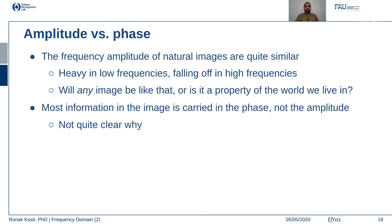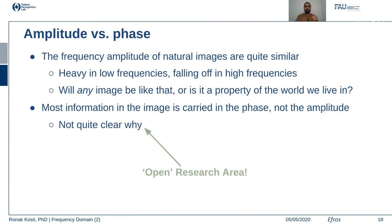As discussed, natural images like zebra and cheetah have very similar frequency amplitude information; what sets them apart is their phase information. Natural images are heavy in lower frequencies and fall off at higher frequencies. This raises the interesting question of whether most information in an image is carried in phase rather than amplitude — and if so, why. This is a very interesting open research area regarding how amplitude and phase play roles in image perception.